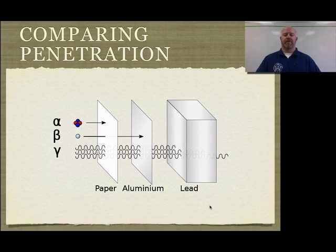Take a quick comparison of the three. In terms of what we have: alpha, beta, gamma. Paper can stop the alpha. Aluminum foil can stop the beta. And even thick blocks of lead or concrete isn't going to get rid of all the gamma radiation. So that's our most dangerous one.